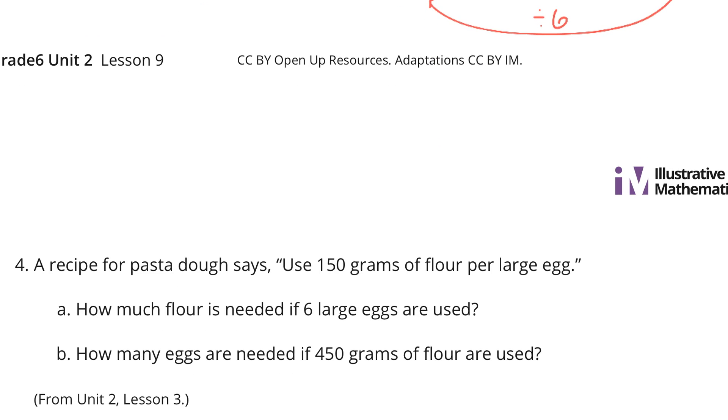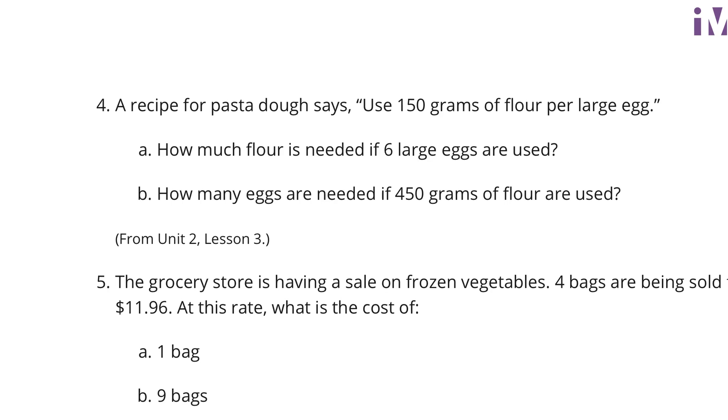Problem 4. A recipe for pasta dough says use 150 grams of flour per large egg. How much flour is needed if 6 large eggs are used? Well, if I'm at 150 grams for 1 egg, and I'm trying to get to 6 eggs, I'm multiplying the bottom here by 6. So I need to multiply the 150 by 6 to increase that by a factor of 6. And so 150 times 6 is 900 grams.